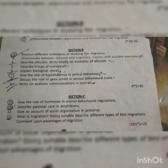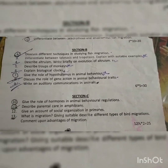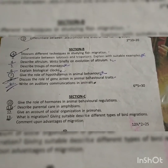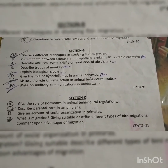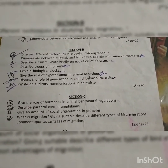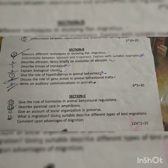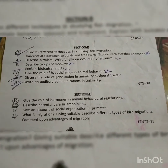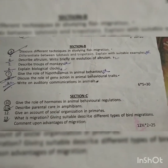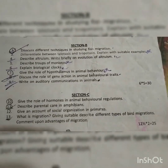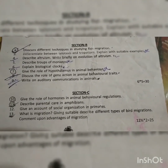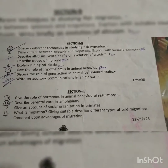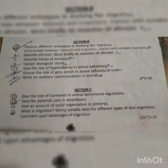Fifth: Describe troops of monkeys. Sixth: Explain biological clocks. Seventh: Give the role of the hypothalamus in animal behavior. Eighth: Discuss the role of gene action in animal behavior. Ninth: Write on auditory communication in animals.